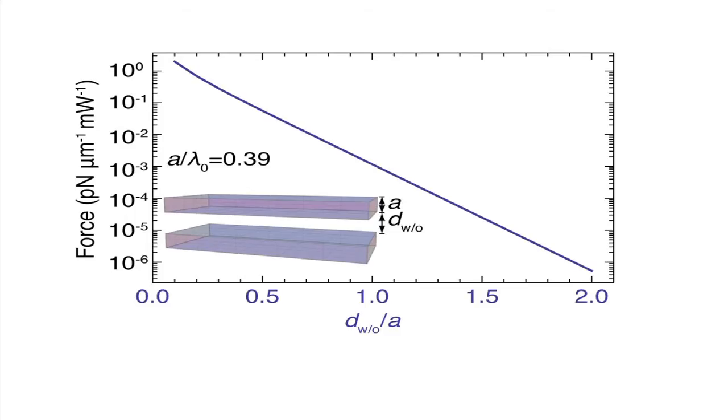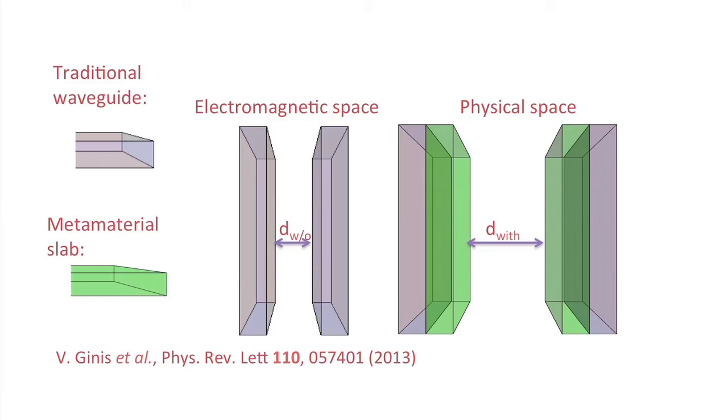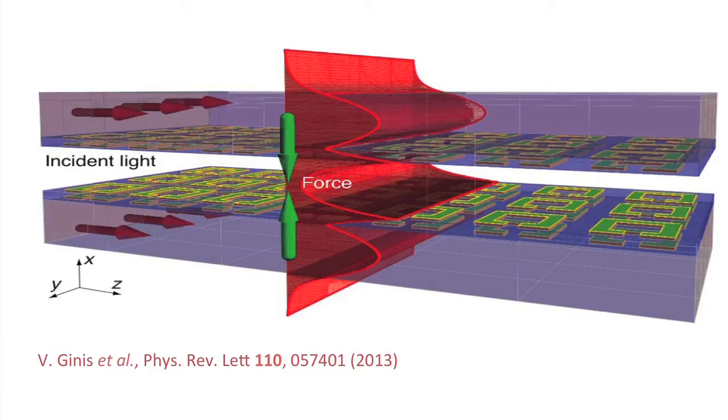Optical forces are very large when waveguides are close to each other but become small when they are far apart. We implement a distortion of the coordinate lines in the electromagnetic space that pulls the waveguides closer together — it folds the coordinates back onto each other such that in the underlying electromagnetic space the waveguides are adjacent. In the material implementation, the waveguides can be far apart; we simply add some metamaterial cladding next to the waveguides. Quite surprisingly, the resulting optical forces in the physical space are the same as in the underlying electromagnetic space. So it is possible to translate the very high optical forces that occur at small separation distances to longer separation distances through metamaterials.